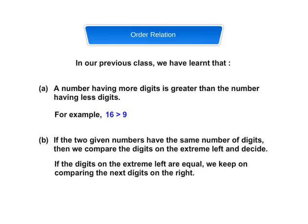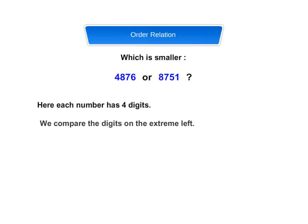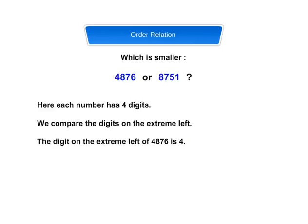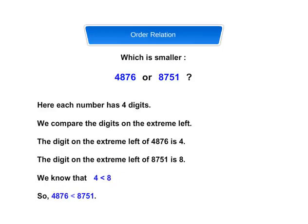If the digits on the extreme left are equal, we keep on comparing the next digits on the right. Let us take an example. Which is smaller: 4,876 or 8,751? Here each number has four digits. We compare the digits on the extreme left. The digit on the extreme left of 4,876 is 4, and of 8,751 is 8. We know that 4 is less than 8. So, 4,876 is smaller than 8,751.